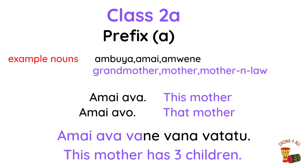Class 2 also includes nouns with prefix a. Examples: ambuya, amai, amainini. Example phrase: Amai ava vana vatatu — this mother has three children. Amai ava — this mother. Amai avo — that mother.